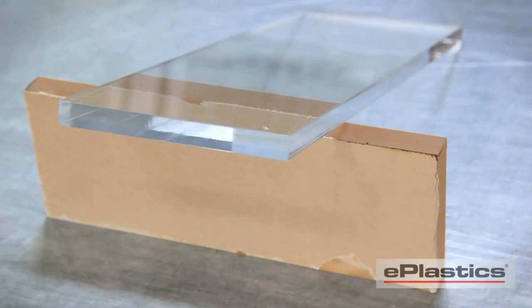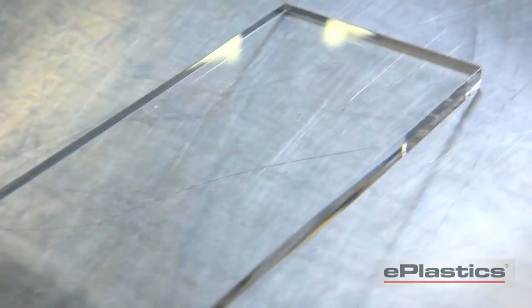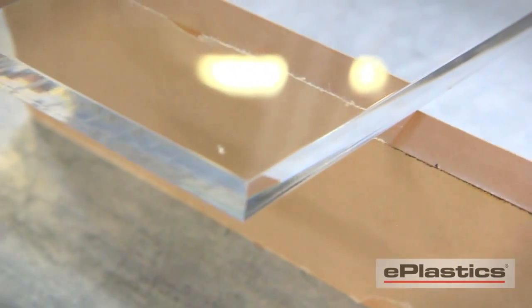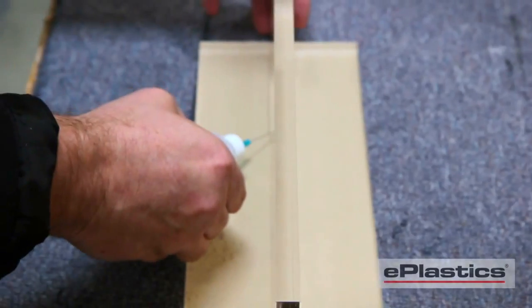Flame polishing introduces a higher level of stress to this material. Gluing or wiping these edges with chemicals can lead to crazing.